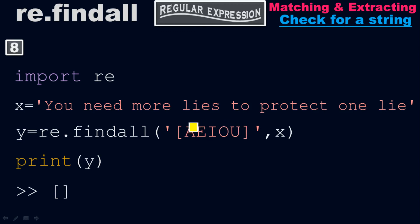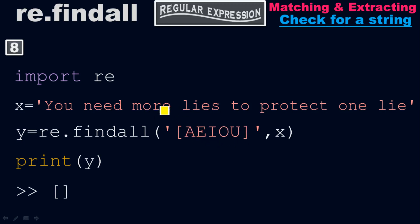The program will check for all these uppercase characters in x and print them, but when you take the print of y it returns an empty set — because there is no matching. Look, in the string the only uppercase character is Y, but Y is not in our list [AEIOU]. There are no uppercase A, E, I, O, or U characters in this line, therefore the program returns an empty set.